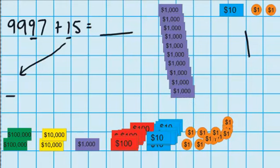But now we've got a new problem. You can see I've got 10 $1,000 notes and I can't have that, so I'm going to have to swap these 10 $1,000 notes for one $10,000 note. Just like last time, this is just a straight swap — I'm not ending up with any more or any less, and we know that 10 $1,000 notes is exactly the same as one $10,000 note.